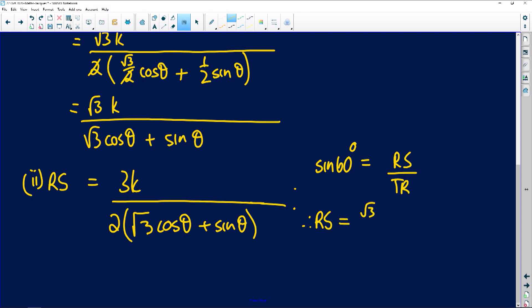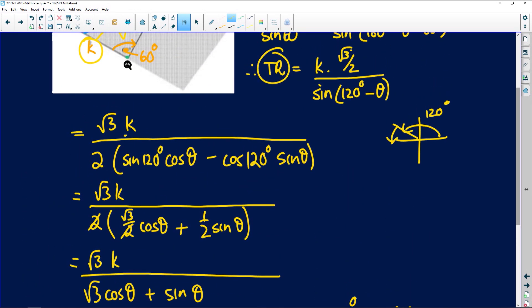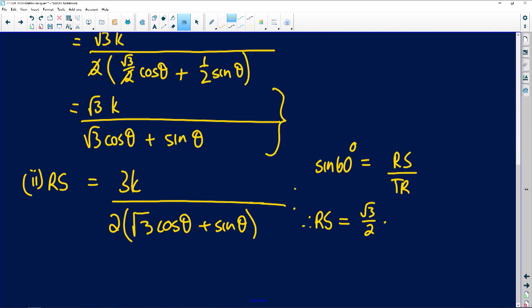Now TR is the side that we found over here. TR we found to be equal to this component there, so root 3 k over the bracket root 3 cos theta plus sin theta. Now you can see here, root 3 times root 3 is 3k over twice that bracket, root 3 cos theta plus the sine of theta.